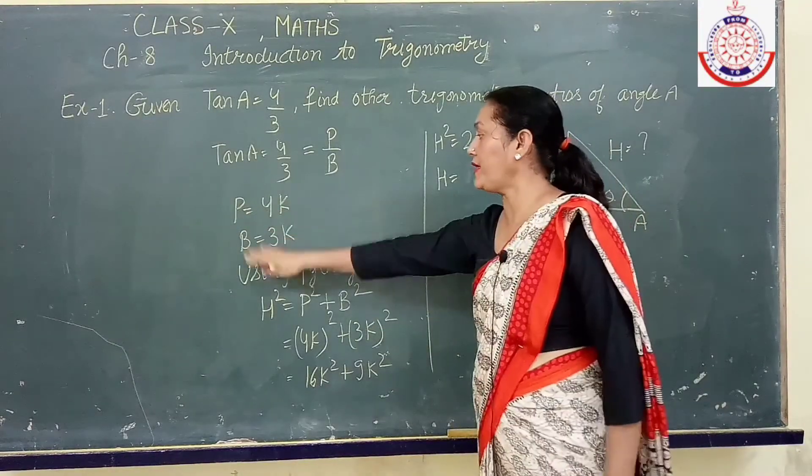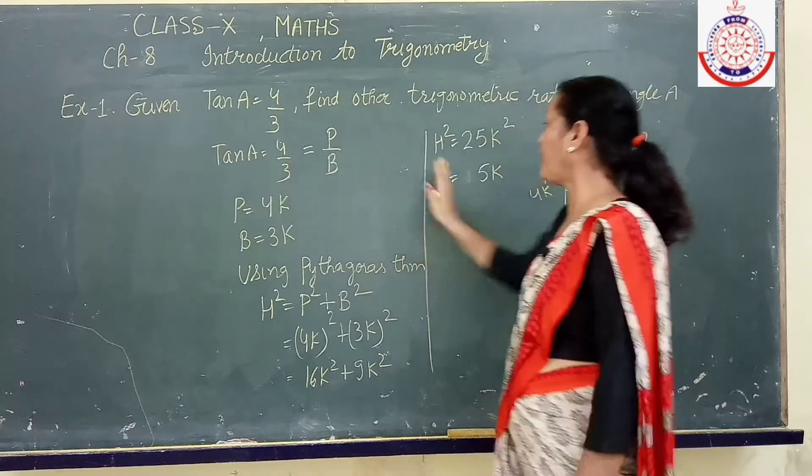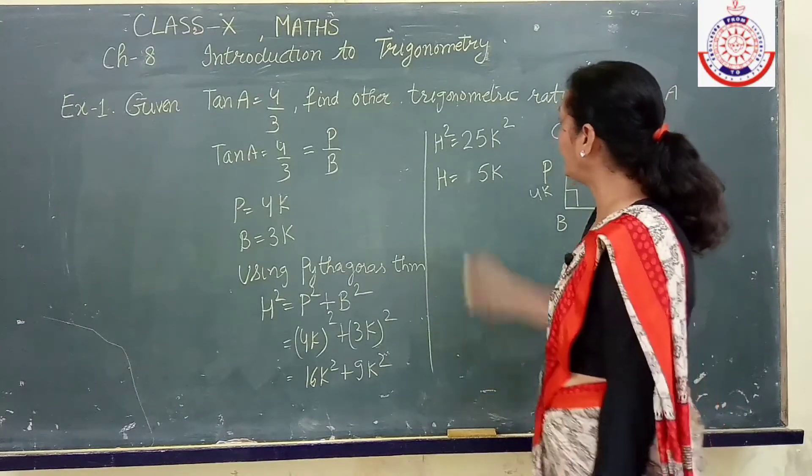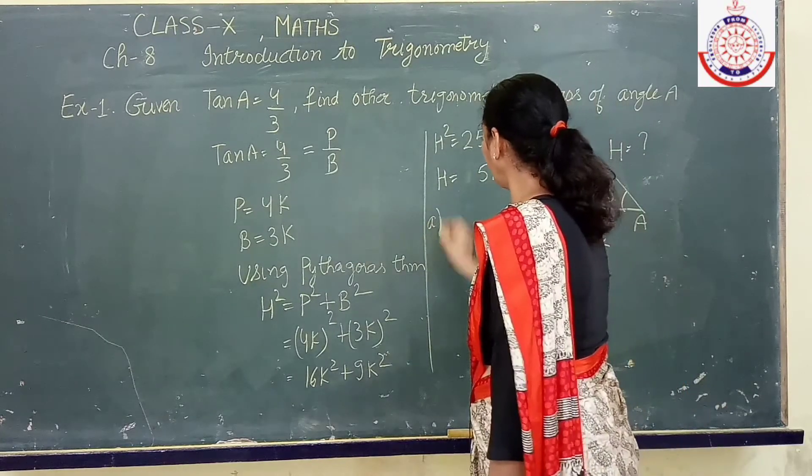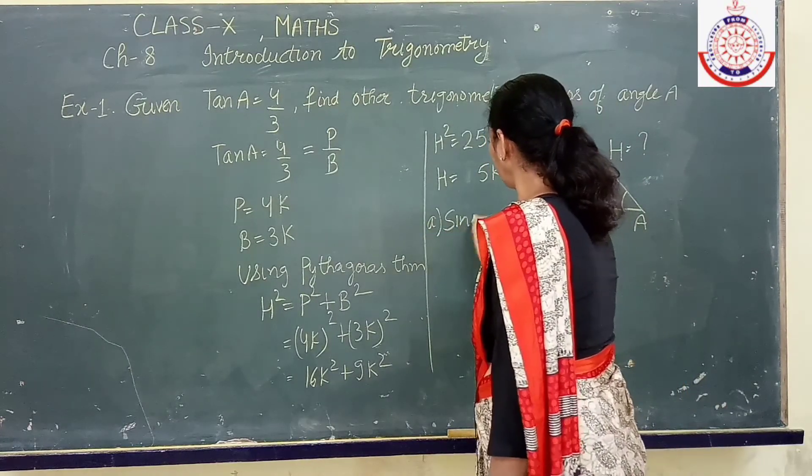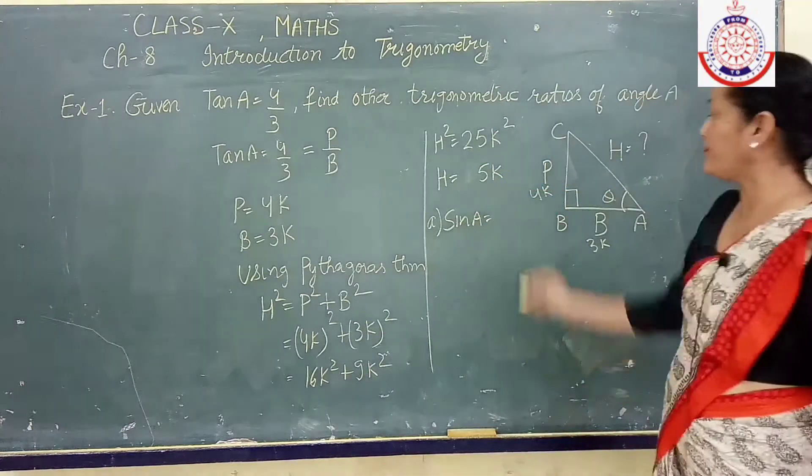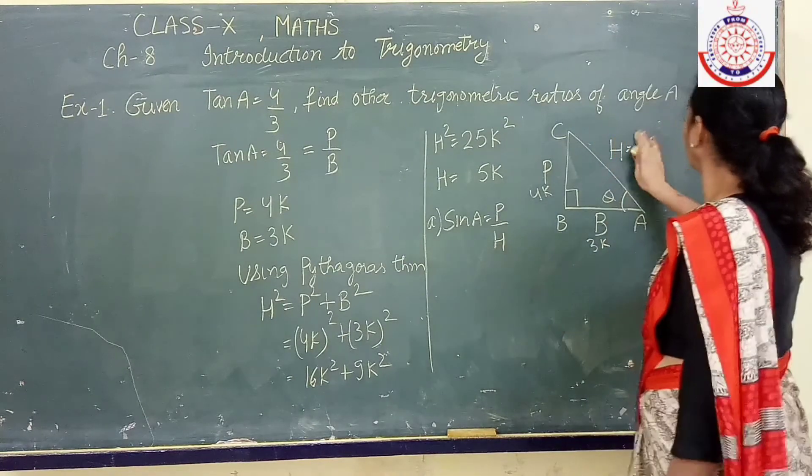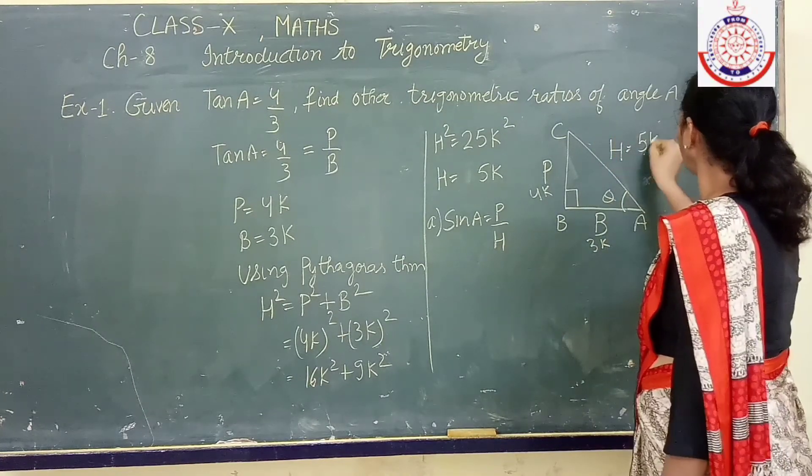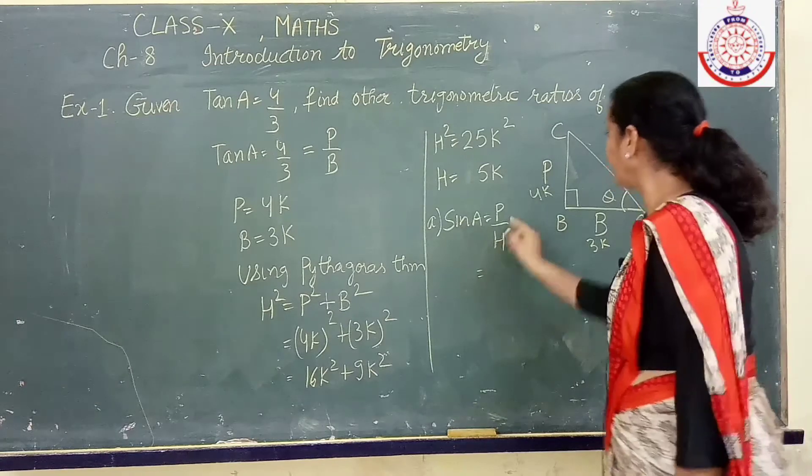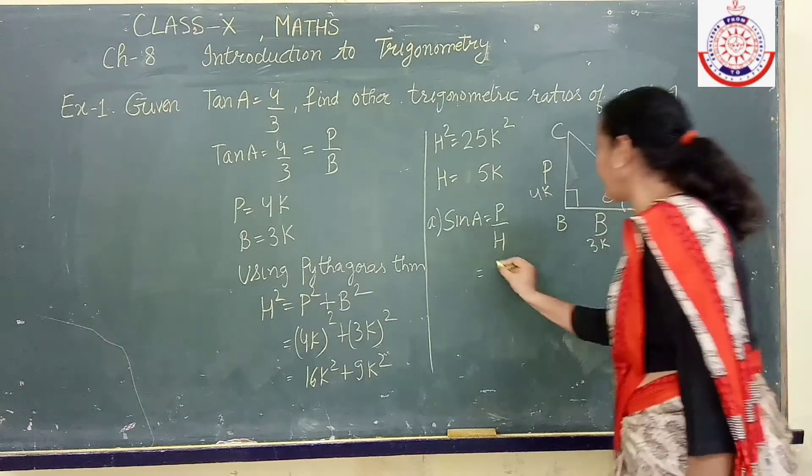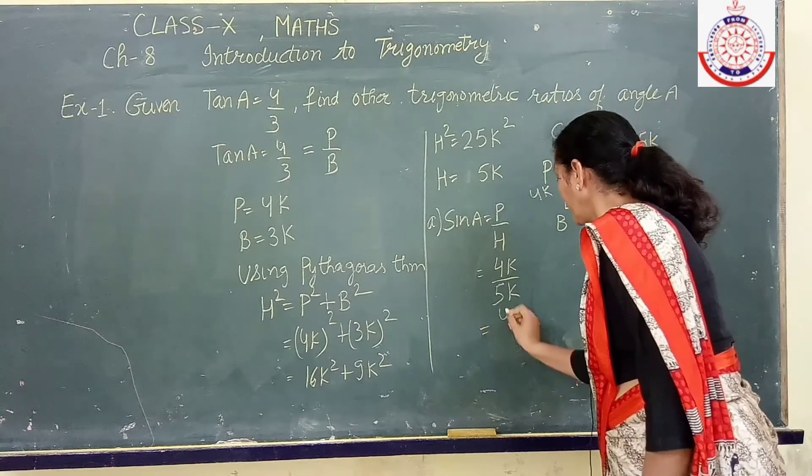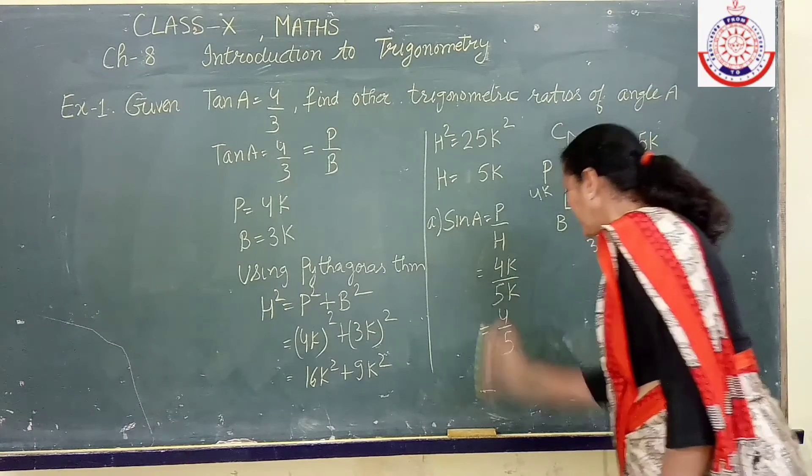Now perpendicular and base were already given to us. We have obtained hypotenuse. Now we can very easily find our trigonometric ratios. So start with first one. Sine A. Sine formula is perpendicular upon hypotenuse. Now hypotenuse we have got 5k. Perpendicular is 4k. So it is 4k upon 5k. That is 4 upon 5.